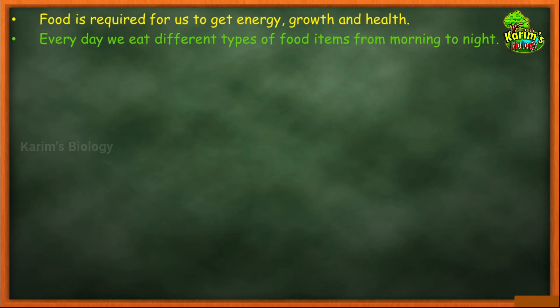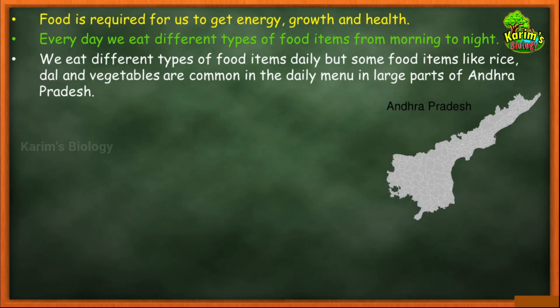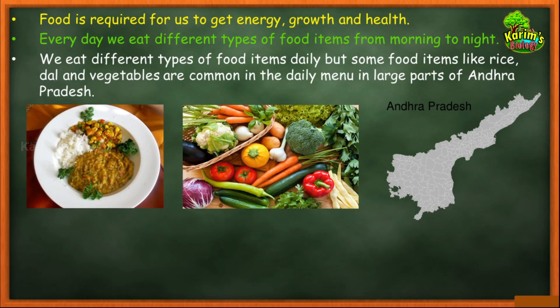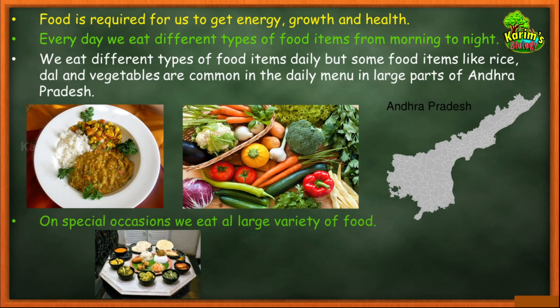Every day we eat different types of food items from morning to night — starting with breakfast and ending with supper. In Andhra Pradesh, food items like rice, dal, and vegetables are common in the daily menu. Our staple food is rice and dal, along with various vegetables. Not only this, but on special occasions we also eat a large variety of other food items — like a delicious cake on your birthday, or a special dish at your cousin's birthday party — including dishes from other states.